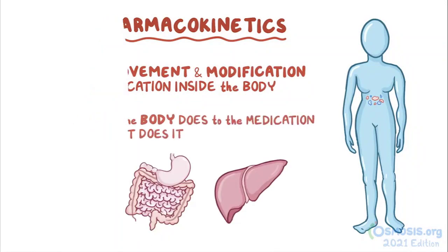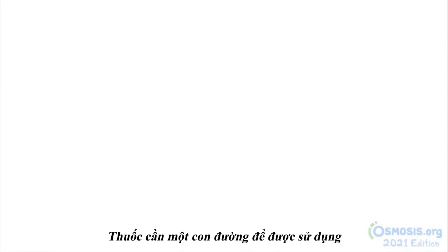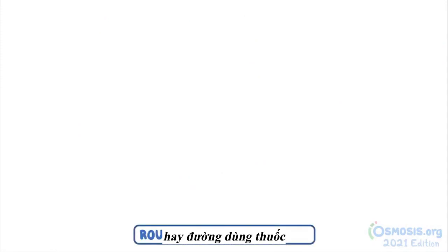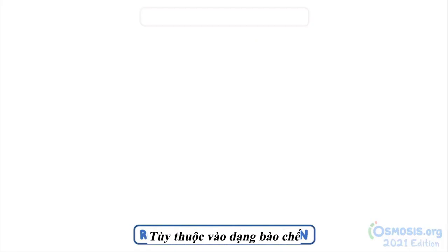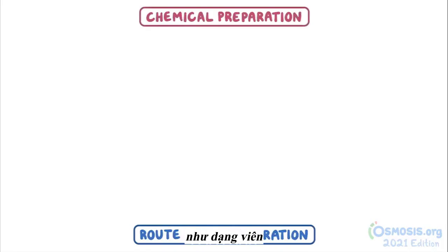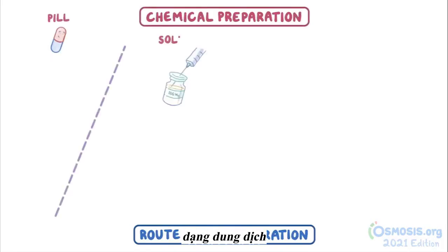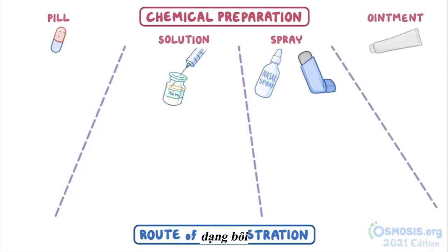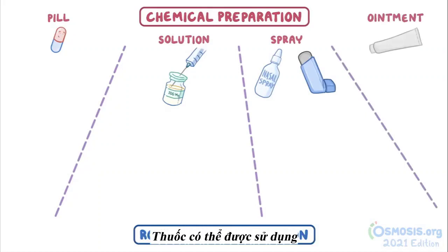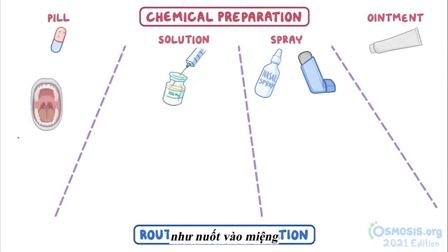First things first. A medication needs a way to be administered, or a route of administration. Depending on the form of the chemical preparation — like a pill, solution, spray, or ointment — and the part of the body being treated, the medication can be administered through various means or routes, such as swallowed by the mouth.